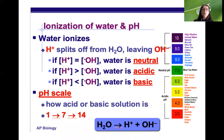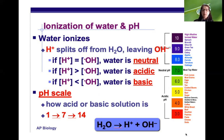The pH scale ranges from 1 to 14, where 7 is neutral because the concentration of both ions is the same. 1 is very acidic and 14 is very basic.